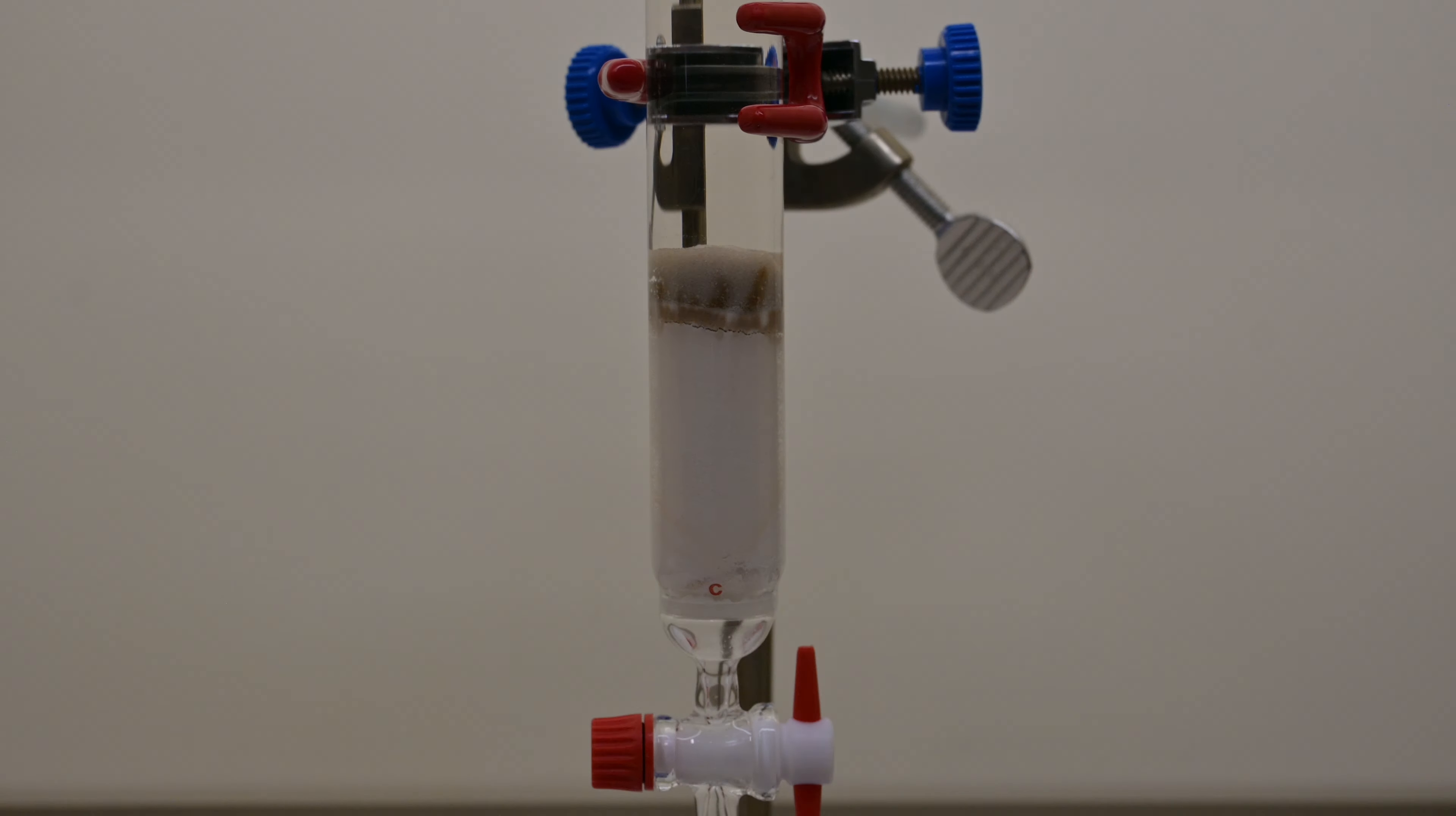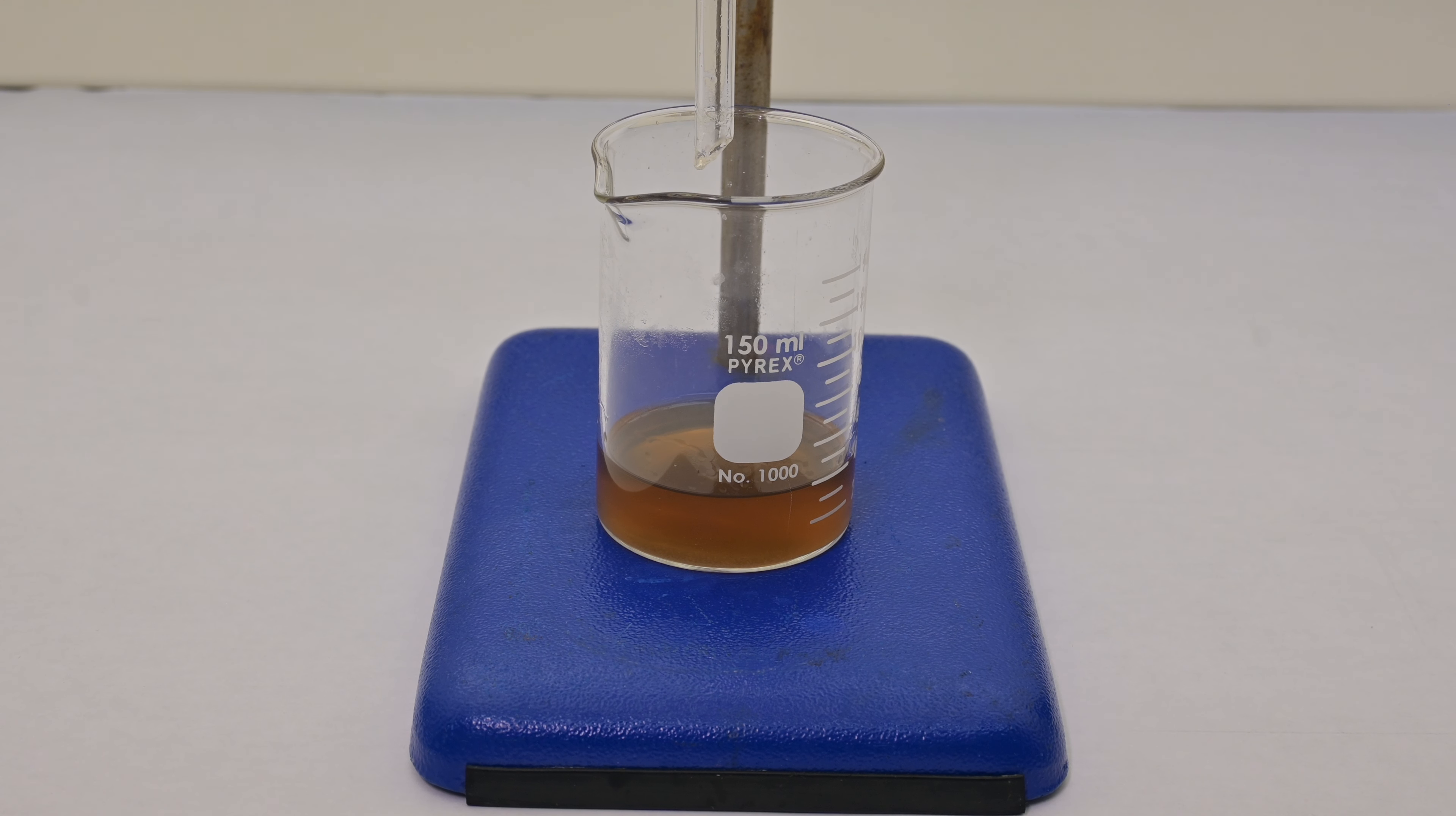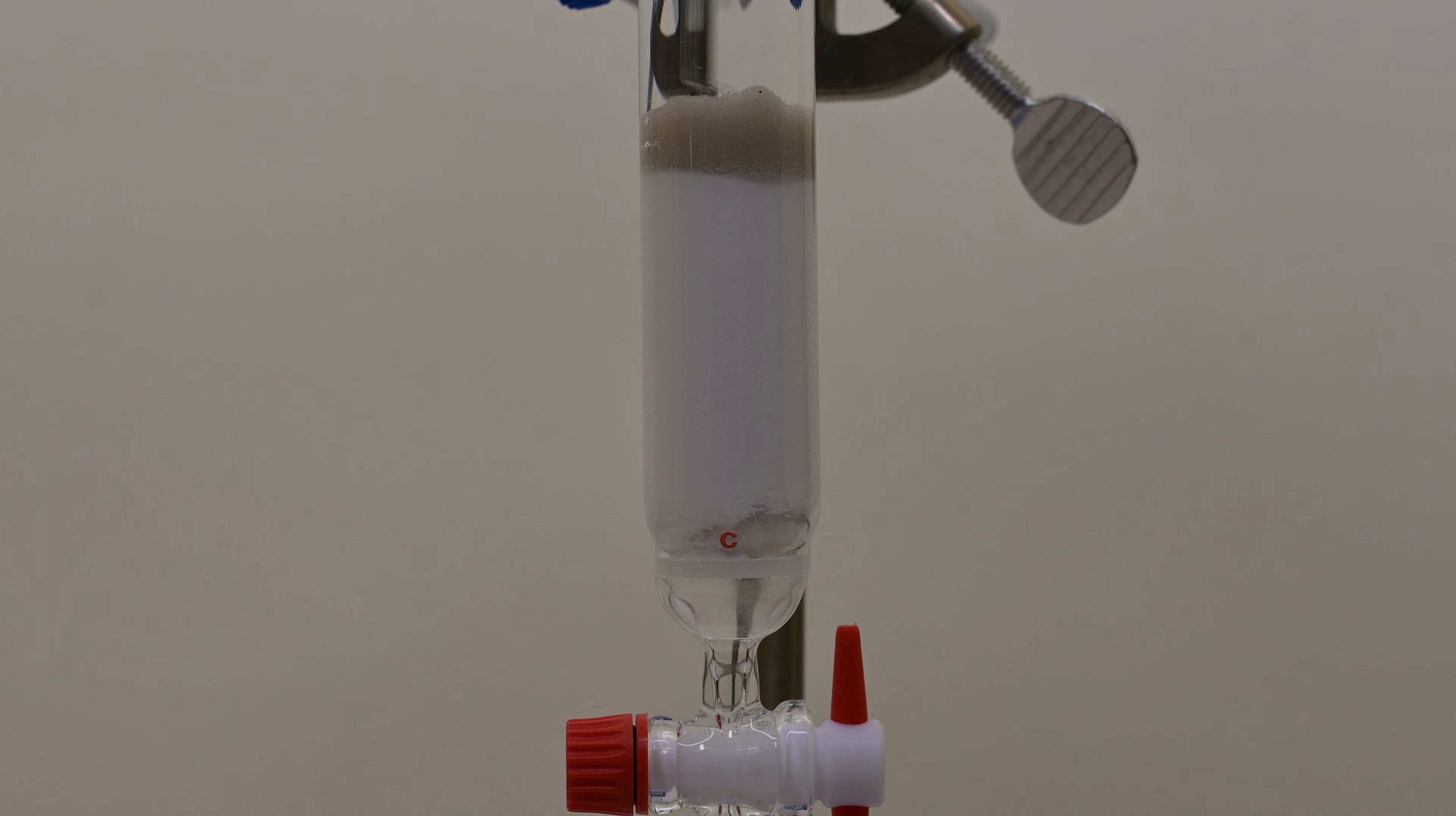Next, methanol is poured into the column to force the DEET out. To complete purification, evaporate the methanol from the DEET solution over a steam bath. This method ensures the isolation of highly purified NN-diethyl-M-toluamide.